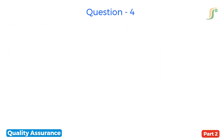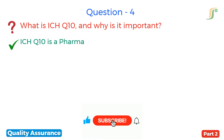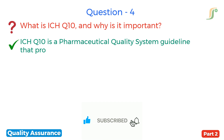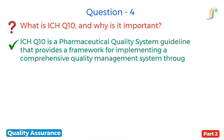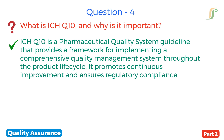The fourth question is: what is ICH Q10 and why is it important? ICH Q10 is a pharmaceutical quality system guideline that provides a framework for implementing a comprehensive quality management system throughout the product life cycle. It promotes continuous improvement and ensures regulatory compliance.